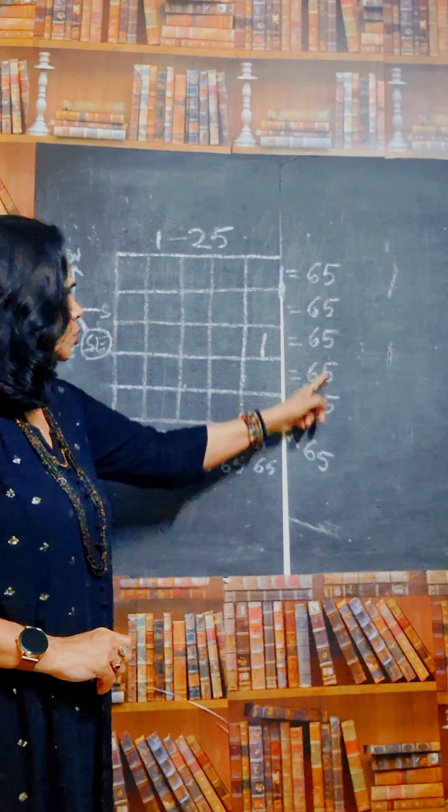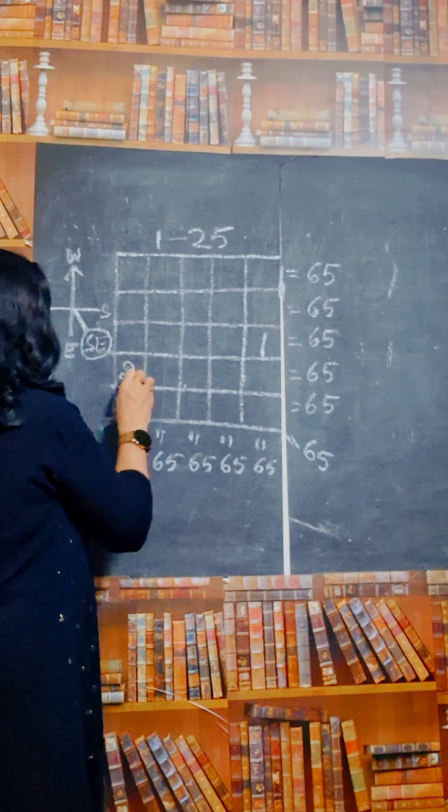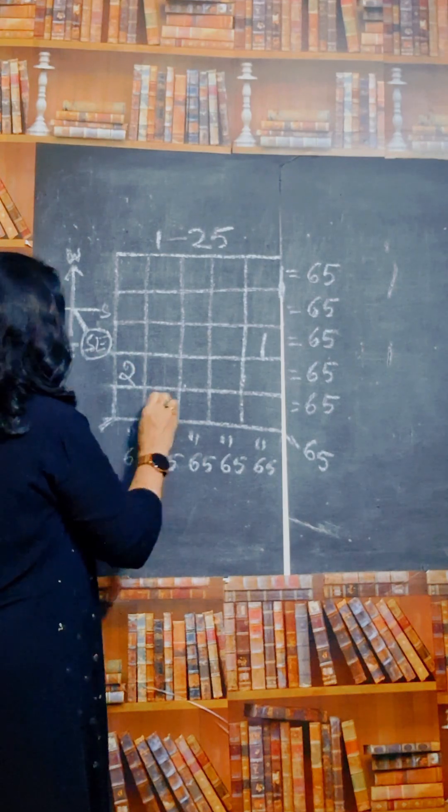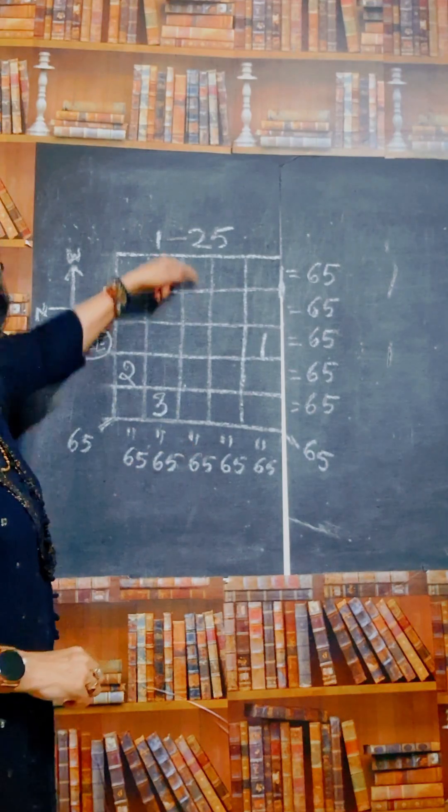Okay, 1 here. 2 should be here in the south east, but here there is no box. Go to the last box here, that is 2. Then south east, then 3. Then south east, 3 here, but there is no box. Go to the top box.